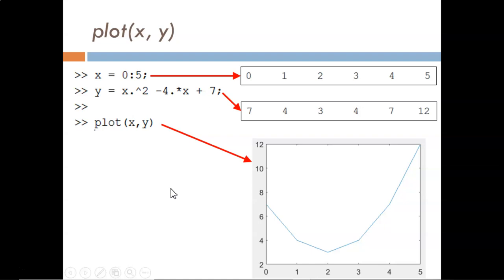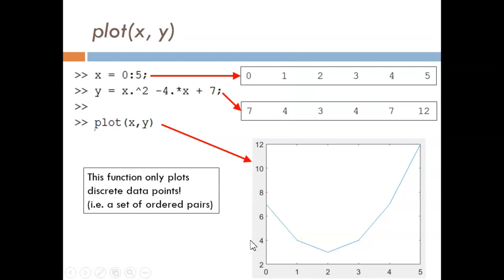Why does the plot have corners? Because we plotted discrete data points. In other words, we plotted ordered pairs. The first ordered pair is 0,7. We can see that on the left side of the figure. The next ordered pair is 1,4. And so on. So, MATLAB lays out the known ordered pairs on the plot and then simply connects the dots with straight lines.